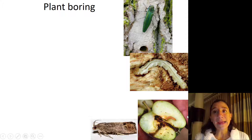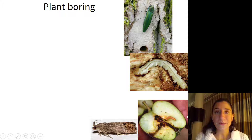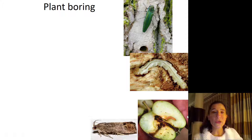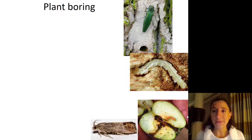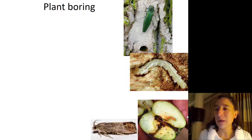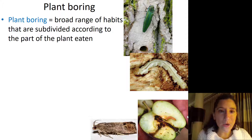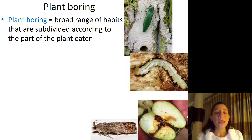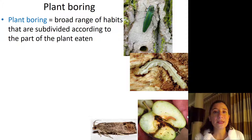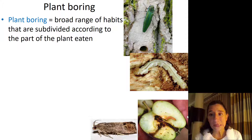In addition to mining through plant leaves or stems, insects can also bore right into them — hopefully I'm not boring you right now. Plant-boring insects occupy a wide range of habitats and are generally subdivided by the parts of the plant they are eating.